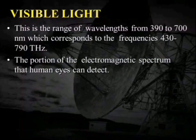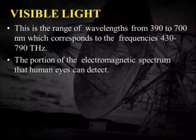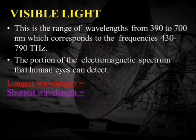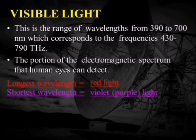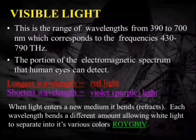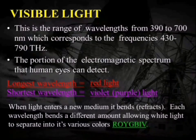Visible light is the range of frequencies visible to the human eye — from 430 to 790 terahertz in frequency, and 390 to 700 nanometers in wavelength. The longest wavelength corresponds to red light and the shortest to violet light. When arranged in increasing order of frequency, they form ROYGBIV, or remembered in reverse as VIBGYOR, where R stands for red and V for violet.